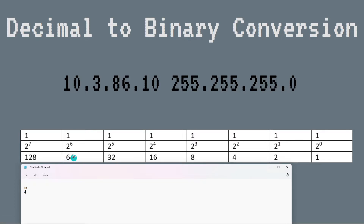So then I ask: how about 64? Can I do 10 minus 64? No — that's a zero. How about 10 minus 32? No. How about 10 minus 16? No. Anytime the answer is no, I put a zero.